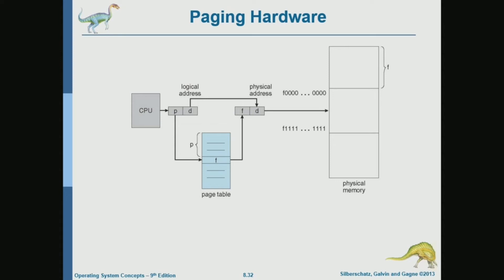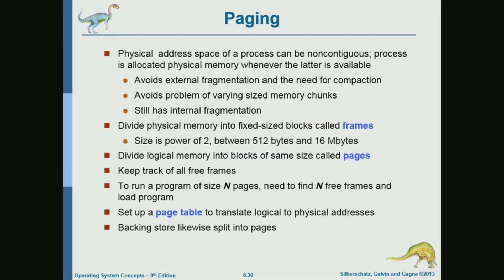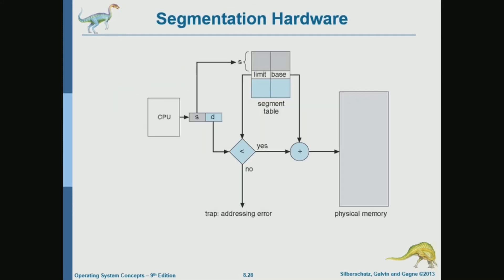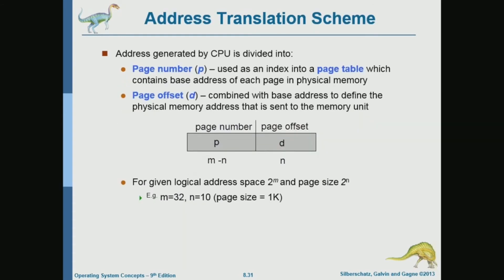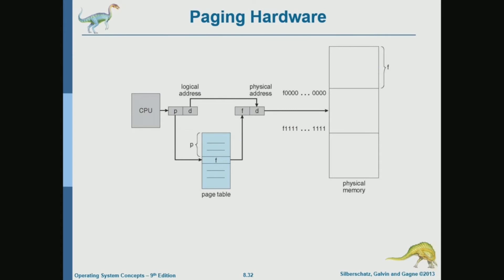Do you notice something about the page table that makes it different from the segmentation table? In the segment table, each entry had a base and a limit. With paging, we don't need a limit because all pages by definition have the same size. If the page size is 4K, that's a constant — we don't have to keep it in every page table entry.